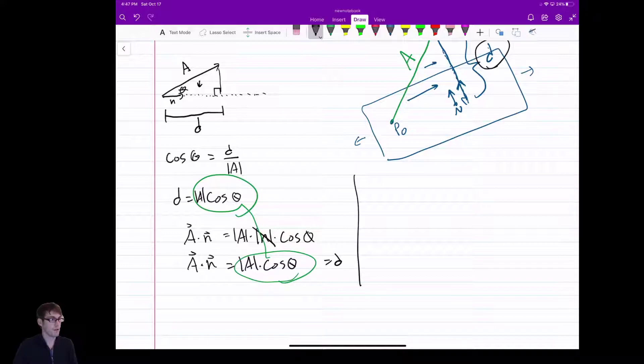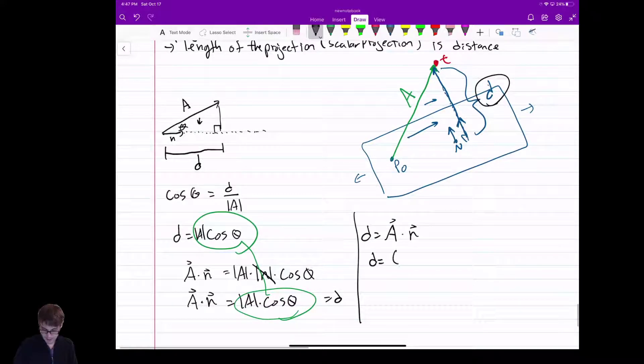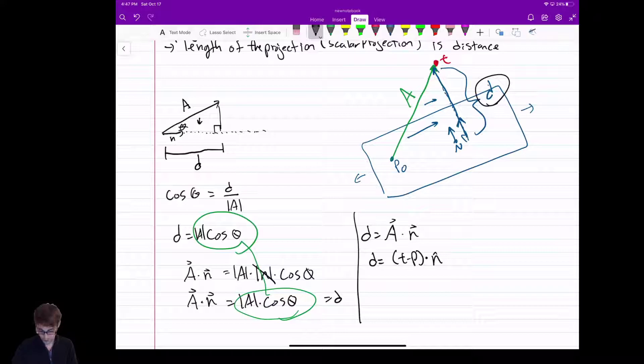D is going to be A dot product N. Now, of course, A is just T minus P dot product N, assuming N is normalized. That'll work, and we're done.